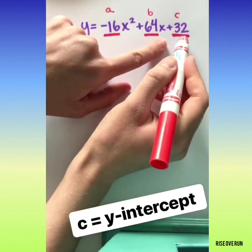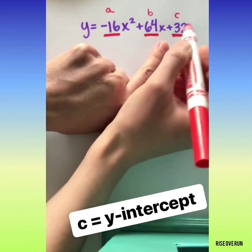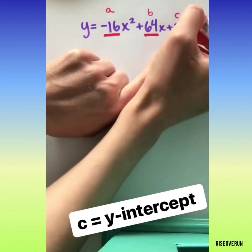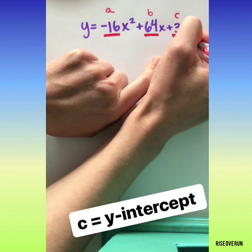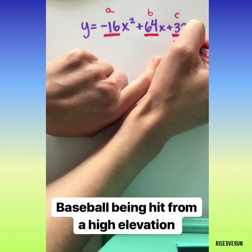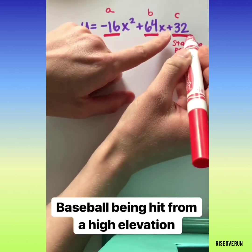Now, c is pretty important and you do need to know what it represents. Just like with linear equations, the constant represents the y-intercept. That's your starting point. If we're graphing something being thrown, this is the height that it started.